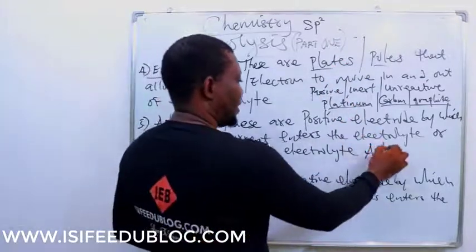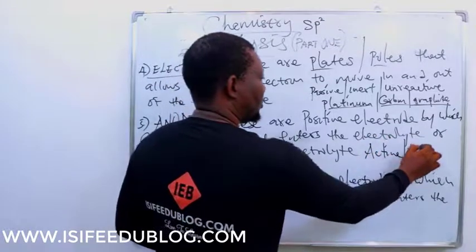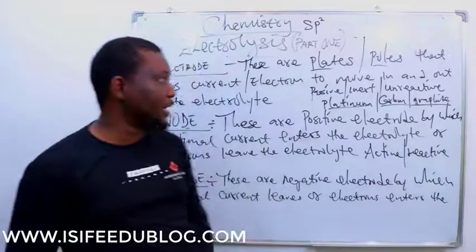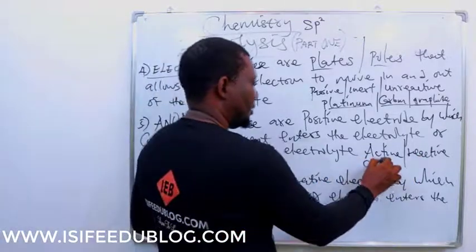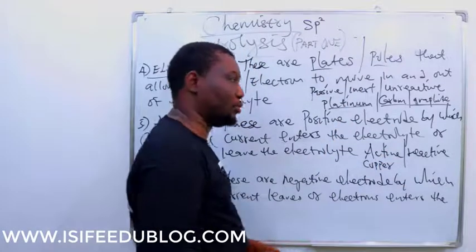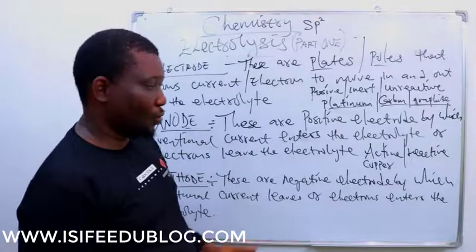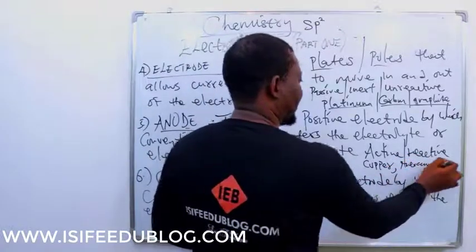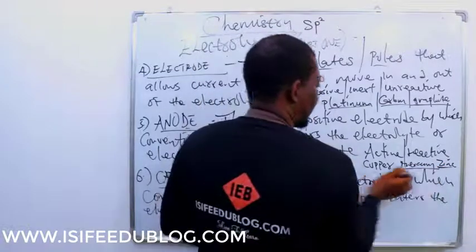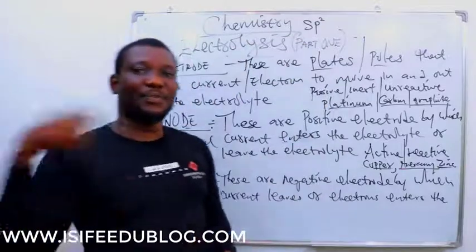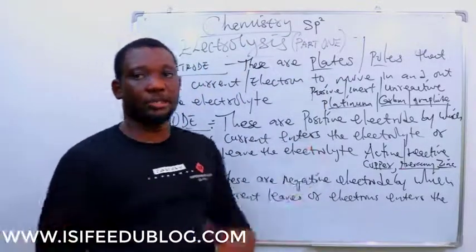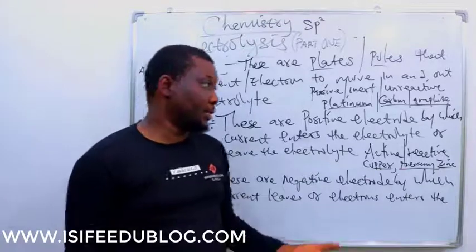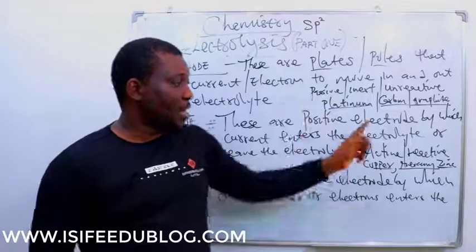On the other hand, active or reactive electrodes are those that get involved and interfere with ion migration to the electrode. An electrode can be classified as passive/inert/unreactive or active/reactive. When metals such as copper, mercury, or zinc are used as a cathode or anode, they will interfere with ionic discharge during electrolysis — such electrodes are referred to as active electrodes.